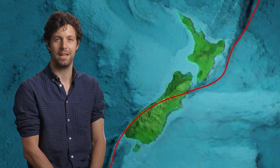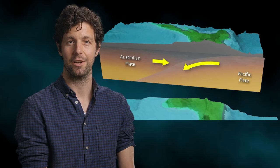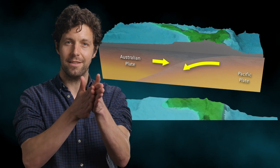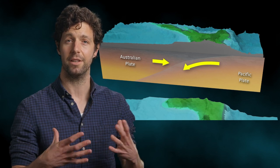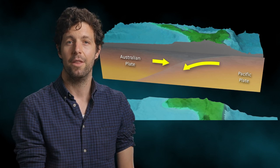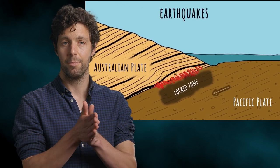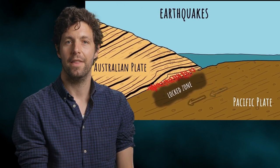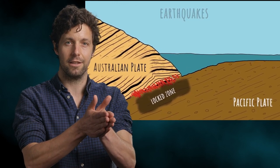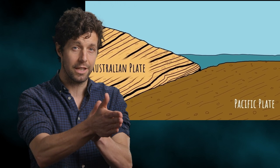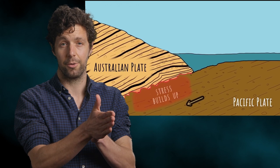New Zealand is situated at the plate boundary between the Australian and the Pacific plates, and these plates are going underneath one another or they're kind of rubbing against each other, and what that's doing is it's causing stress to build up in New Zealand. The way this stress is released is through movement on faults, or kind of breakages in the rock. Stress builds up on these faults, and some faults are quite locked — they'll take a lot of stress and then suddenly move really quickly — while other faults creep along, releasing that stress through smaller earthquakes.